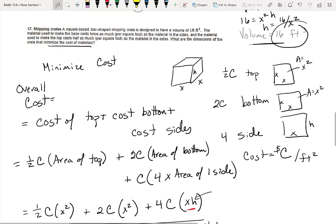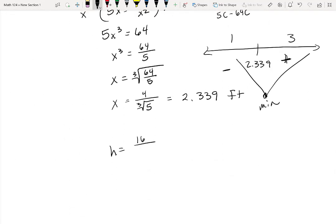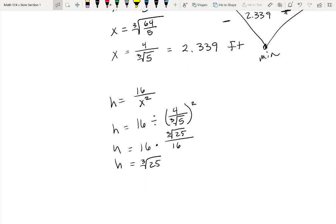Now what do I need to do? Find h. Right here. 16 over x squared. h is 16 over x squared, divided by 4 over the cube root of 5 and that's squared. So I get 16 times and then I'm going to square this and flip it. So I get cube root of 25 over 16. I just get the cube root of 25 as h. h is 2.924 feet.